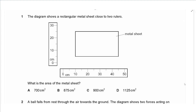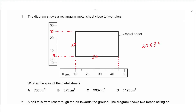Question 1: The diagram shows a rectangular metal sheet close to two rulers. What is the area of the metal sheet? We need the length and the width. One side points to 5 and 25, giving a length of 20 cm. The other side points to 10 and 45, giving a width of 35 cm. Area = 20 × 35 = 700 cm². Answer is A.